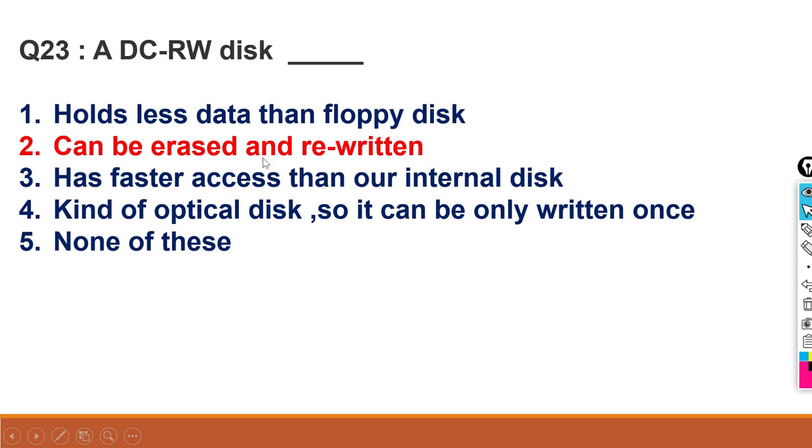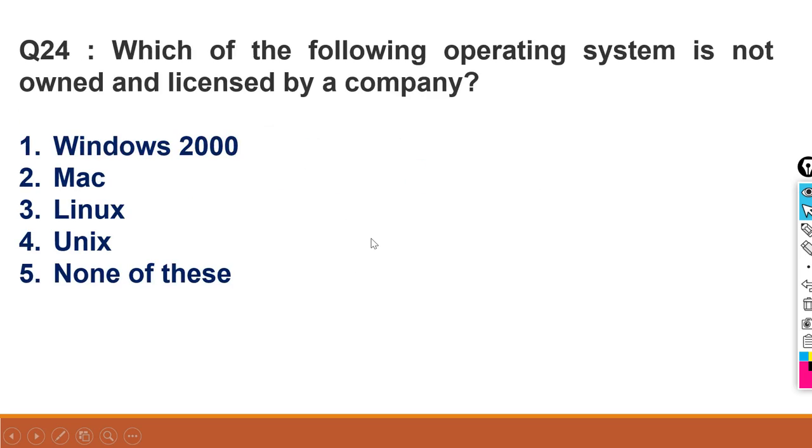A CDRW disk can be erased and rewritten. Which of the following operating system is not owned and licensed by a company? It is Linux. You can check the first video. Mac, Windows, Unix - these operating systems are licensed by the company. And when there are any updates, the company can be updated and changes can be done. But Linux is free. No one can download it and change it and sell it or you can find it and spread it. Linux, there is no company that can change it. We can change it and transfer it.